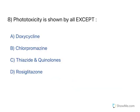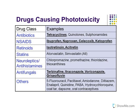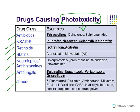Next: phototoxicity is shown by all except — again a clustered adverse effect question. Out of four options, three cause phototoxicity and one does not. Tetracyclines cause phototoxicity. Chlorpromazine (CPZ) also causes phototoxicity. Thiazides, quinolones, and fluoroquinolones are very notorious for causing phototoxicity. Only rosiglitazone will not cause phototoxicity. The drug classes causing phototoxicity include antibiotics, NSAIDs, retinoids, statins, neuroleptics, antifungals, and others. Take a screenshot and write it down so you remember.